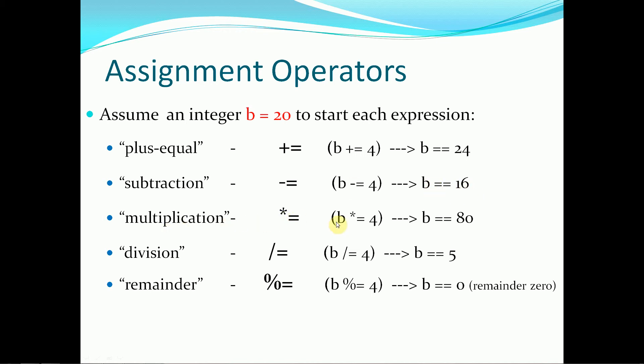The same applies for multiplication, 20 times 4 stored back into the variable b gives us 80. The division equal symbol, same thing applies. 20 divided by 4 stored back into the same variable gives us 5.